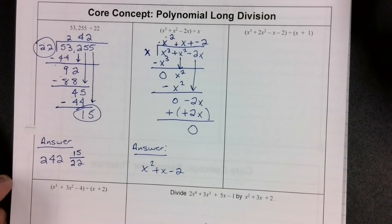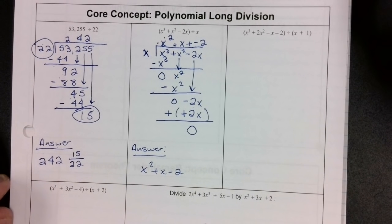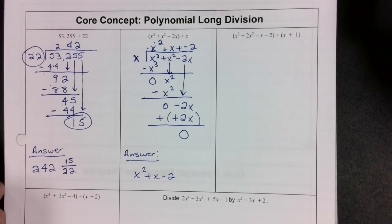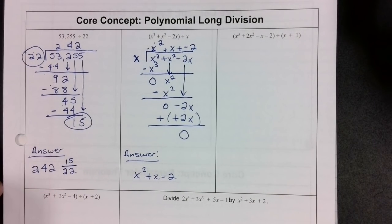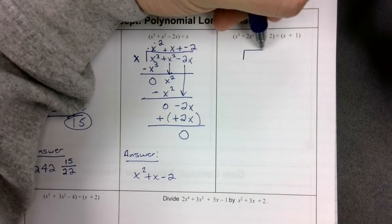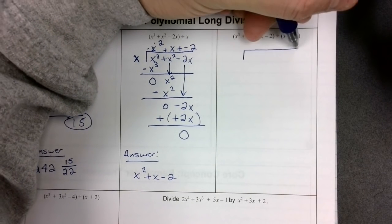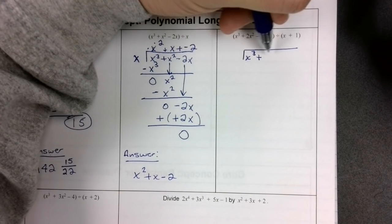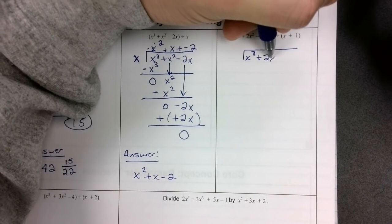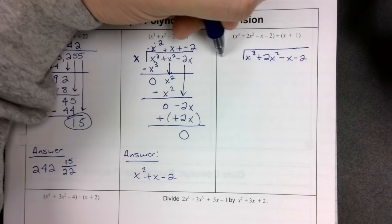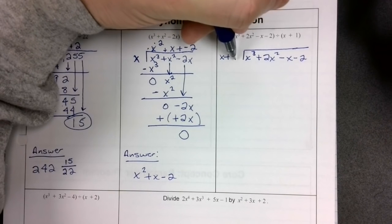Let's go on to the next one. We have x to the third plus 2x squared minus x minus 2, and this time we're going to divide by x plus 1. So x cubed plus 2x squared minus x minus 2 goes underneath, and x plus 1 goes on the outside. Our setup process and thought process are the same.